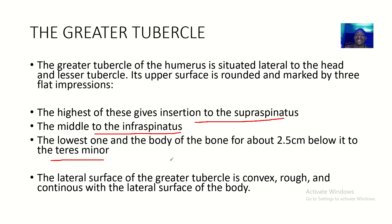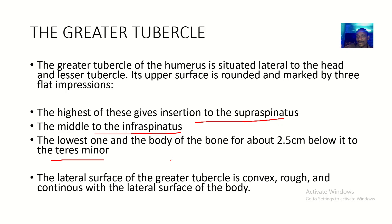Those are the rotator cuff muscles we spoke about — we've already done a lecture on the rotator cuff. Basically, three muscles of the rotator cuff insert on the greater tubercle at different impressions. The lateral surface of the greater tubercle is convex, rough, and continuous with the lateral surface of the body.